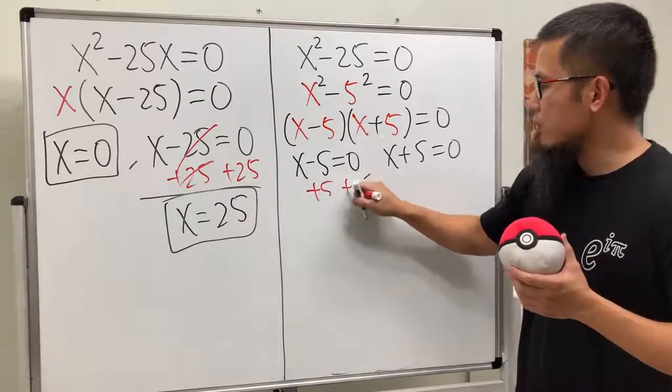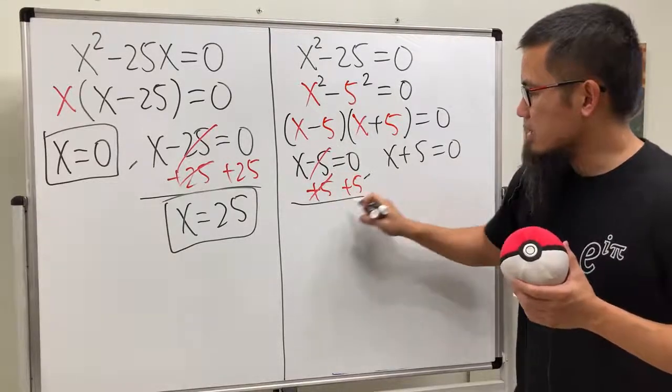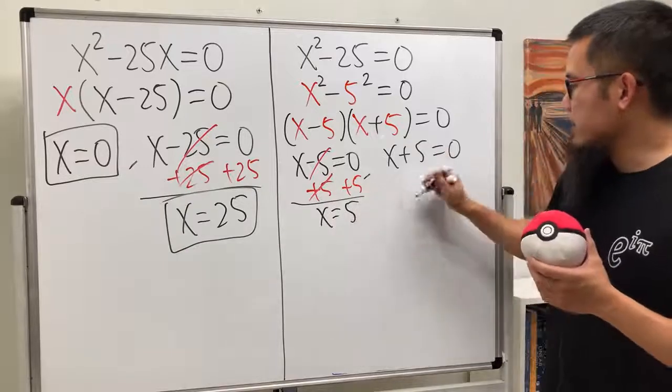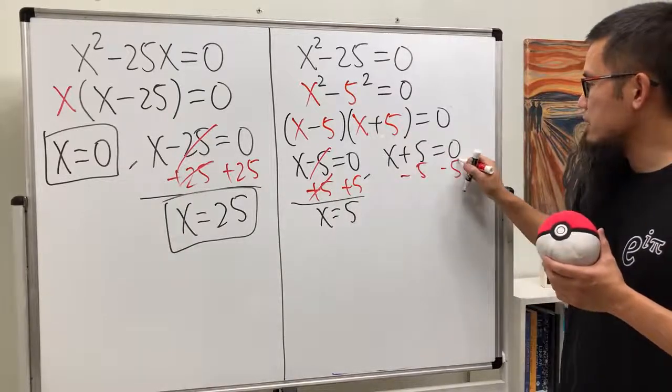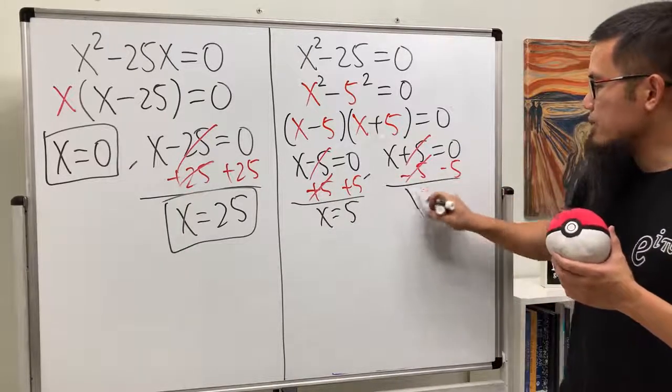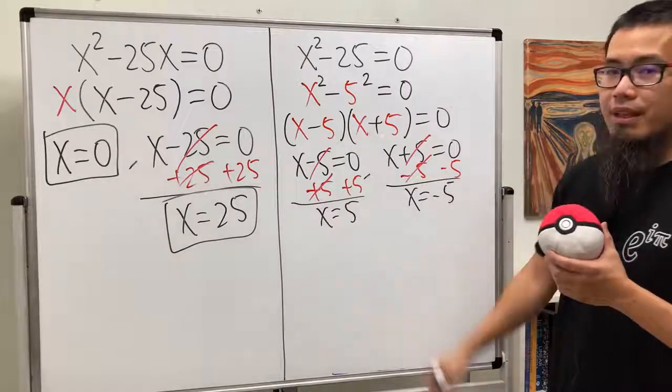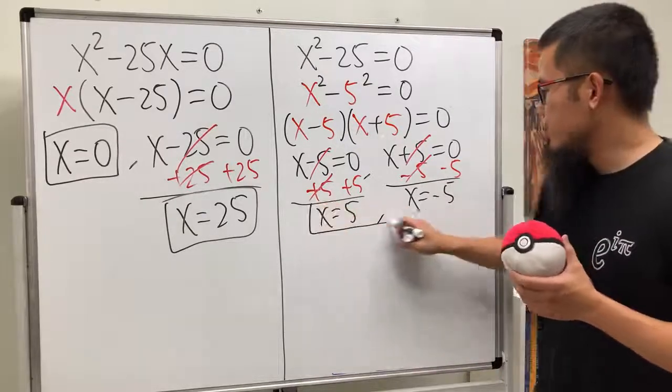For this, just add 5 on both sides. So we get x is equal to 5. And for this, minus 5 on both sides. So that way, we get x is equal to negative 5. And as we can see, we have these two answers.